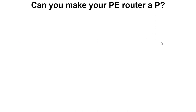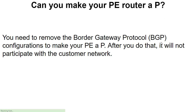Question 8: Can you make your PE router a P router? Answer: To convert a provider edge router into a provider router, you must remove BGP configurations, effectively disassociating it from customer networks.